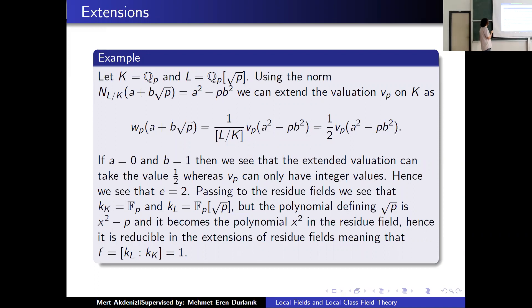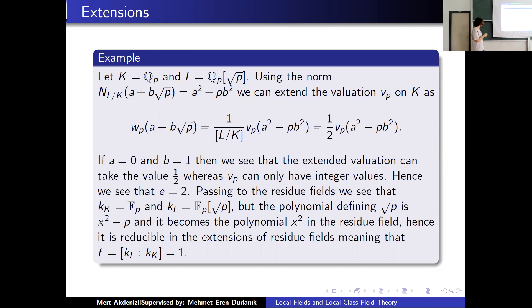Looking at Q_p and its quadratic extension L, using the norm we can extend the valuation on Q_p to L. The valuation takes integer values, but dividing by one half we can get half-integer values, so the ramification index is 2. The polynomial defining this extension is x squared minus p. When we pass to the residue fields, it becomes x squared in F_p — a reducible polynomial — so F equals 1. This is consistent with e times f equaling 2 for a quadratic extension.